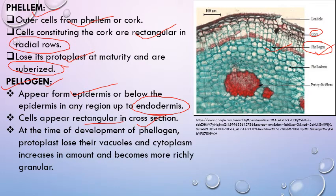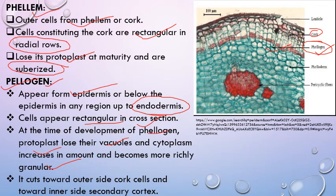At the time of development of phellogen, protoplasts lose their vacuoles, cytoplasm becomes denser and richly granular, and cells become metabolically active. Cork cambium then cuts cork cells towards the outer side and forms secondary cortex (phelloderm) towards the inner side.